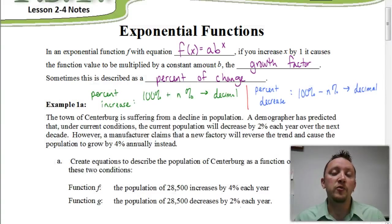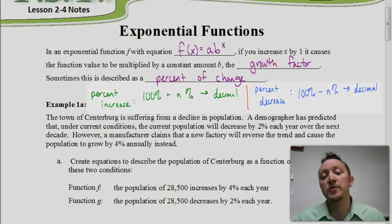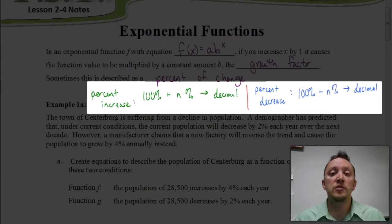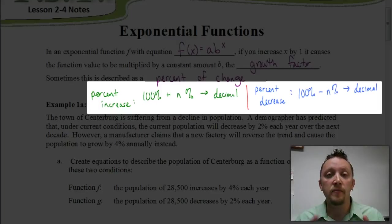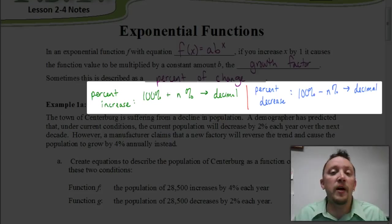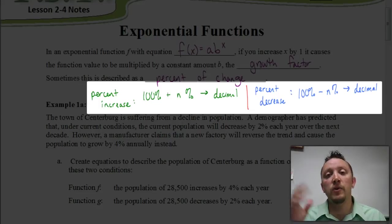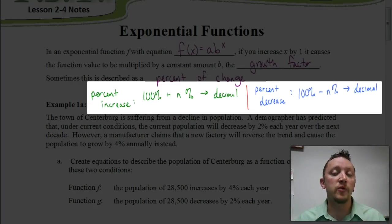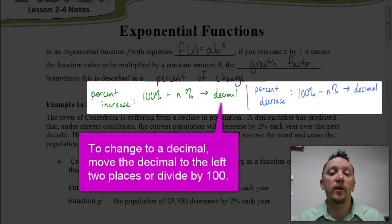There are going to be times where they talk about a situation or story problem dealing with percent increase or percent decrease. In those situations, we never leave the percents as they are. If we're dealing with a percent increase, we had originally 100% of whatever the value was, and now it's increased by another 2%. So we take 100% plus 2%, giving us 102%, and then change that percent to a decimal: 1.02.